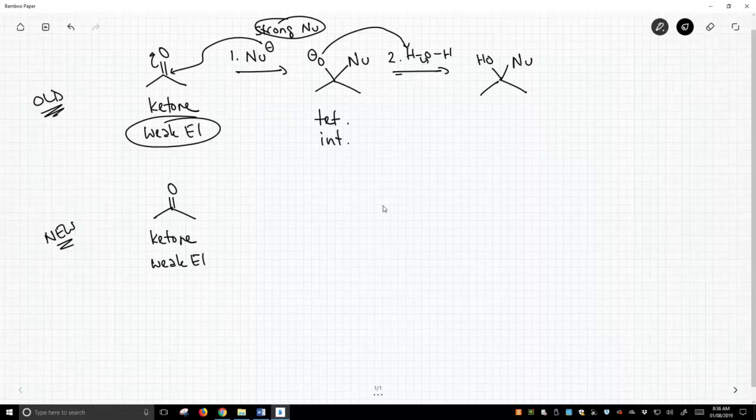Now, how do we get a weak nucleophile to attack our weak electrophile? So what's an example of a weak nucleophile? How about methanol? How do we get methanol to attack?